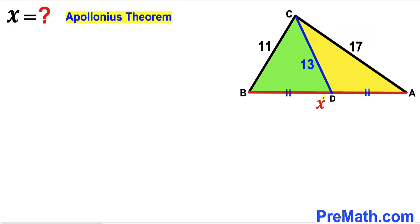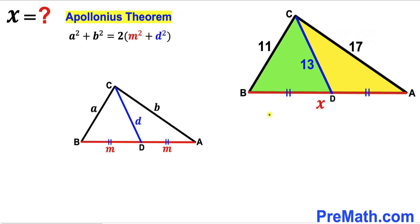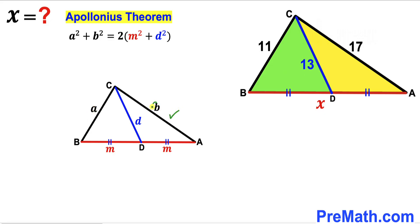We are going to solve for X using the well-known Apollonius theorem. For triangle ABC, the theorem states: a² + b² = 2(m² + d²), where side BC is represented by lowercase a, side AC is lowercase b, the median CD is lowercase d, and both segments BD and AD are m each.